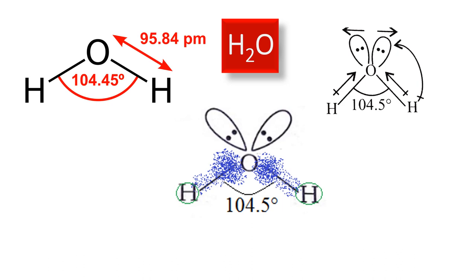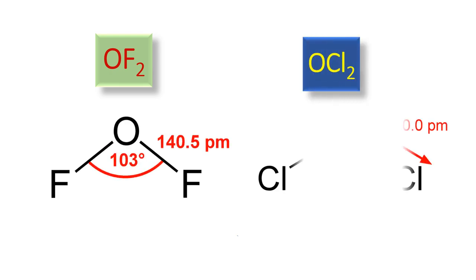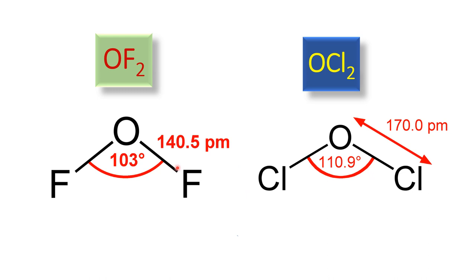Now let us discuss what will happen to the bond angles of OF₂ and OCl₂, since both are similar to H₂O. When we look at the actual bond angles, we see the bond angle of OF₂ is 103° and that of OCl₂ is 110°. We would have expected the bond angles to be similar to water, but surprisingly OF₂ has a lesser bond angle than water and OCl₂ has a higher bond angle than water.